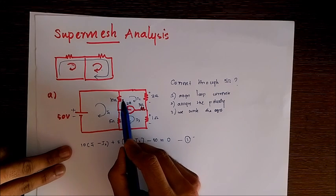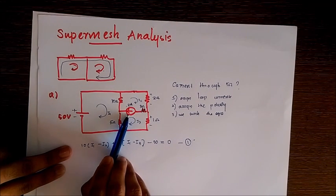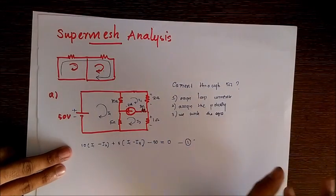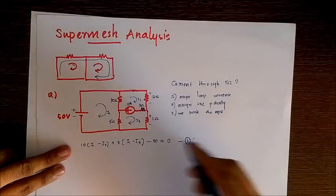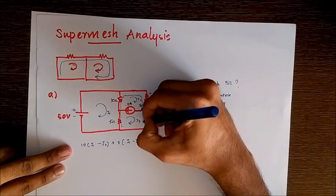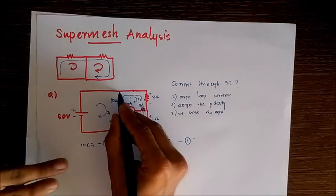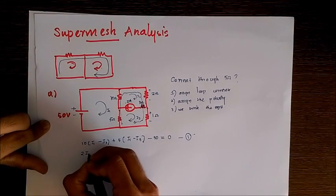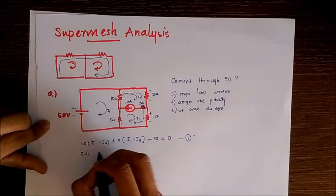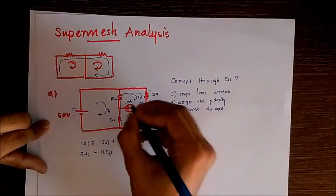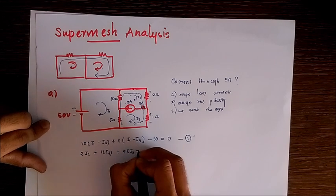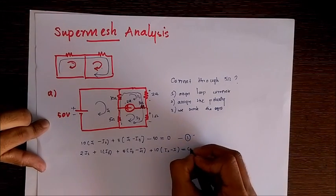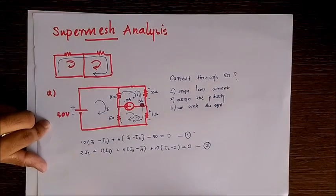To write the second mesh equation, we would normally consider the second loop, but note that this is a 2-ampere current source — we don't know how to find the voltage drop across a current source. So we just avoid it and consider a super mesh, which is the bigger outer loop. Applying the mesh equation for this bigger loop, we get: 2 times i2, plus 1 times i3, plus 5 times (i3 minus i1), plus 10 times (i2 minus i1) equals 0. This is the second loop equation.